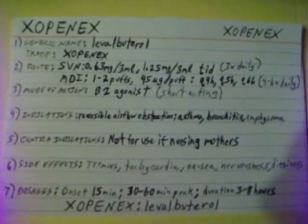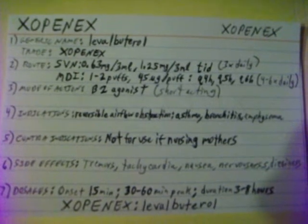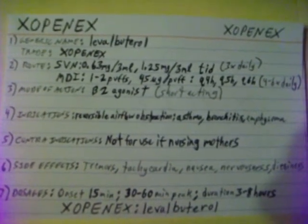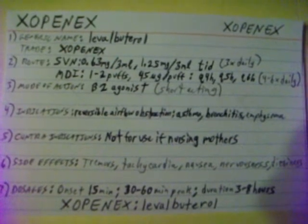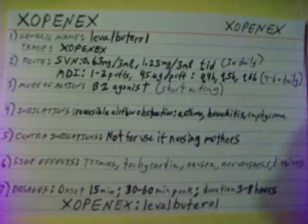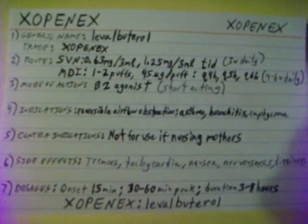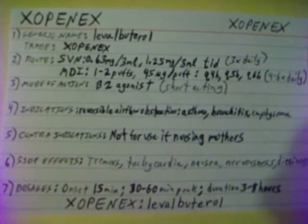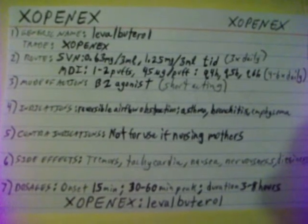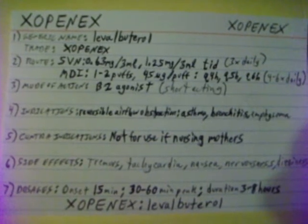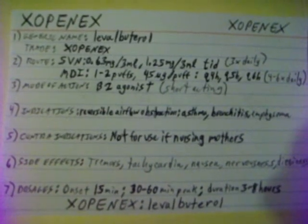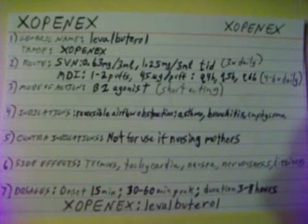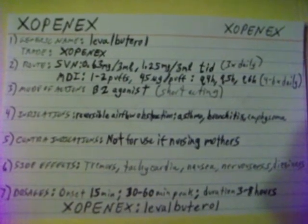Xopenex, generic name Levalbuterol, trade or brand name Xopenex. It can be given by small volume nebulizer in dosages of 0.63mg per 3ml or 1.25mg per 3ml, given TID (three times daily), or by MDI 1-2 puffs of 45mcg per puff.